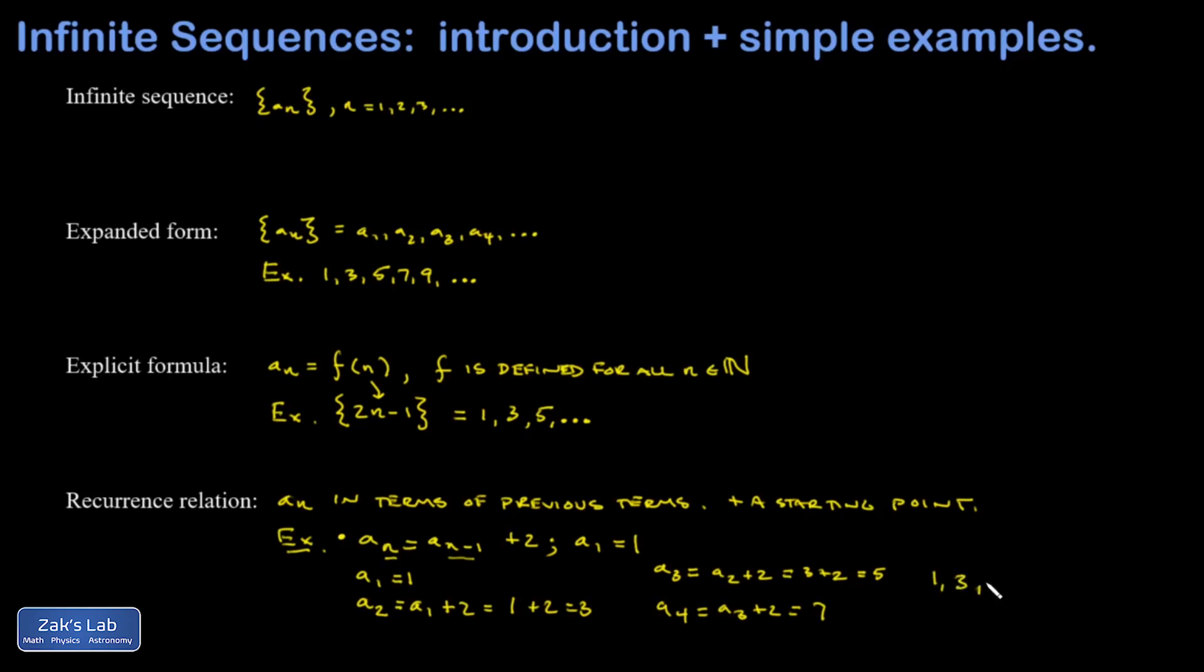a1 is one, a2 is three, a3 is five, a4 is seven, and so on and so on. So we've expressed this simple little sequence—one, three, five, seven, nine, the odd numbers—in several different ways. We have the expanded form up here, we have the explicit formula form, we have the recurrence relation form. And it's just three different ways of dressing up the exact same list of numbers.